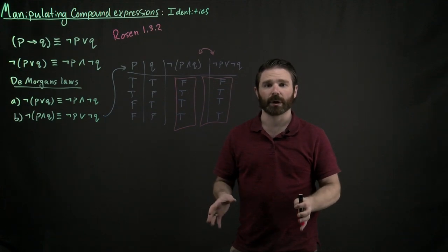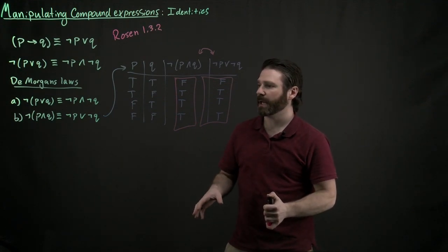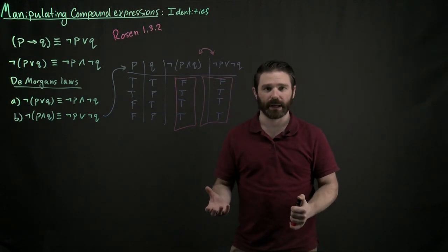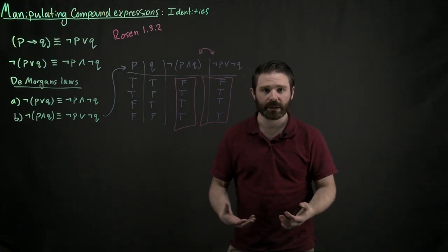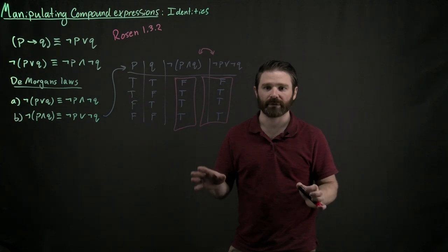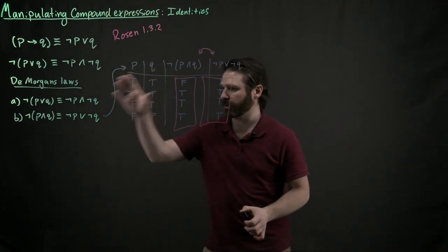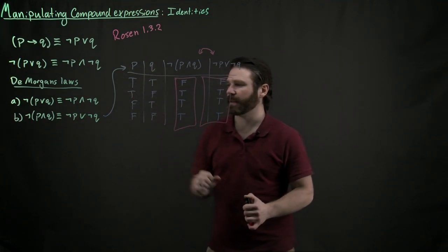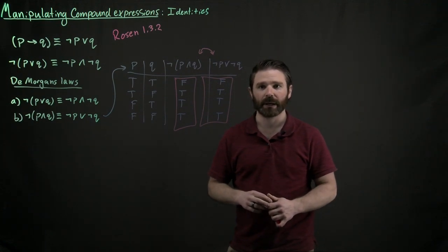So every single one of the identities that we're going to cover in this particular section can be proved by using a truth table. And once you've proved it once using a truth table, you never have to go back and use a truth table to derive that again. You just have that identity and then you know it's always going to be true.